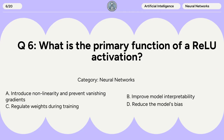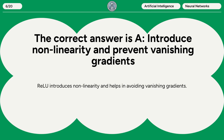Question 6. What is the primary function of a ReLU activation? A. Introduce non-linearity and prevent vanishing gradients. B. Improve model interpretability. C. Regulate weights during training. D. Reduce the model's bias. The correct answer is A: introduce non-linearity and prevent vanishing gradients. ReLU introduces non-linearity and helps in avoiding vanishing gradients.